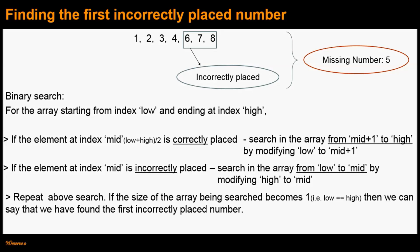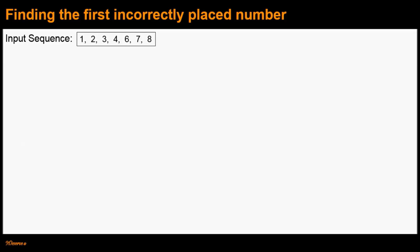We repeat the search using these two steps. If at any point the size of the array becomes 1, meaning low equals high, we have found the first incorrectly placed number. For more clarity, let's run this algorithm on the example sequence 1, 2, 3, 4, 6, 7, 8. The first iteration of our binary search will look like this.